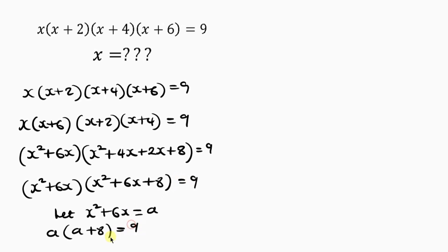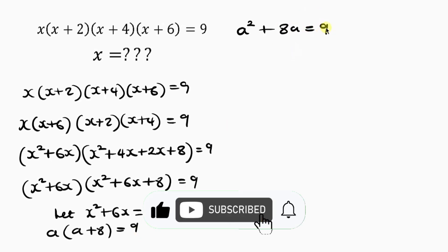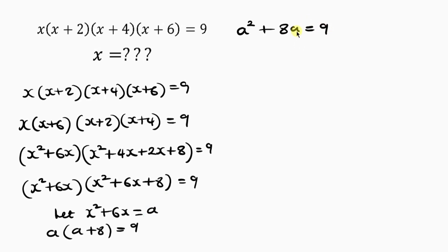Now let's expand this bracket by multiplying what's outside by what's inside. a times a gives a², plus a times 8 gives 8a, equal to 9. Moving the 9 to the left-hand side, we have a²+8a−9 = 0.